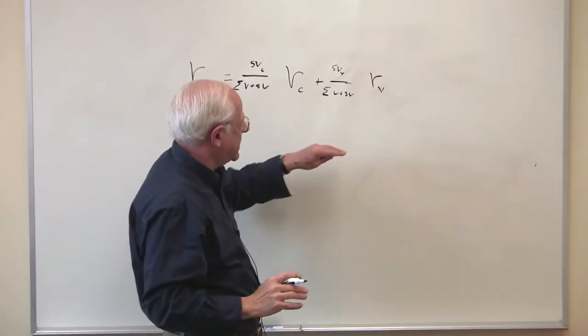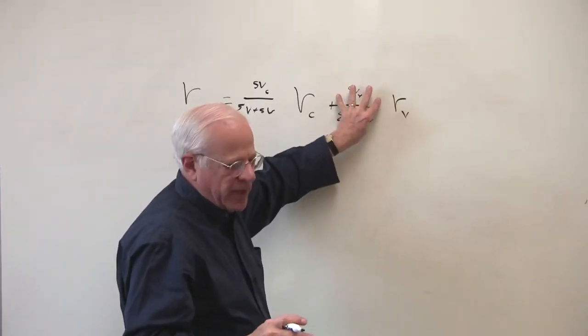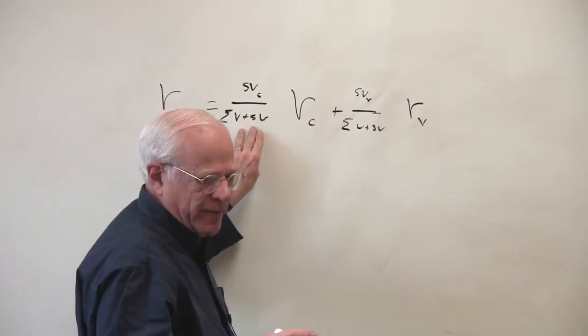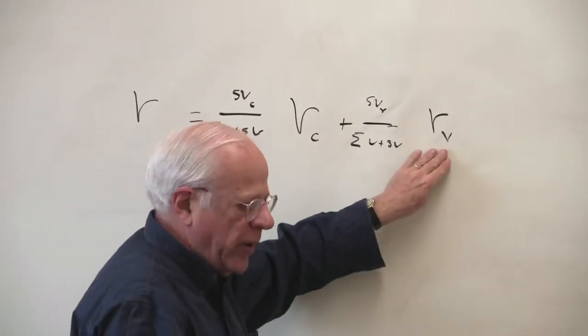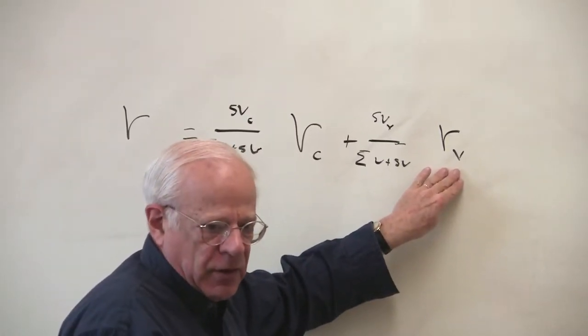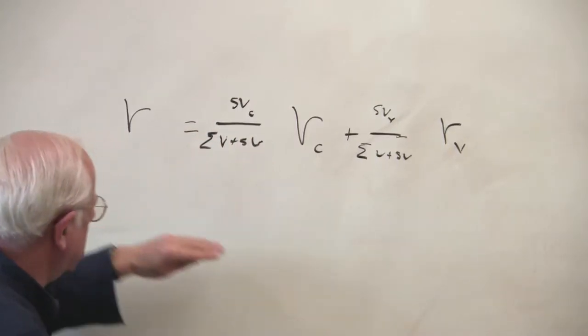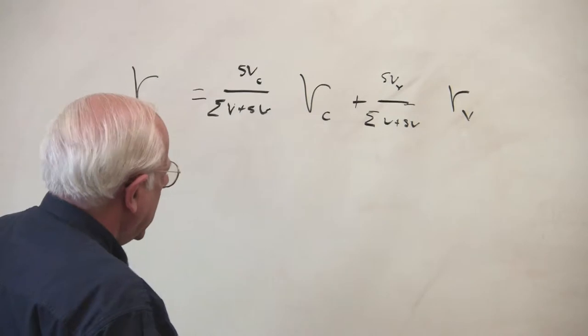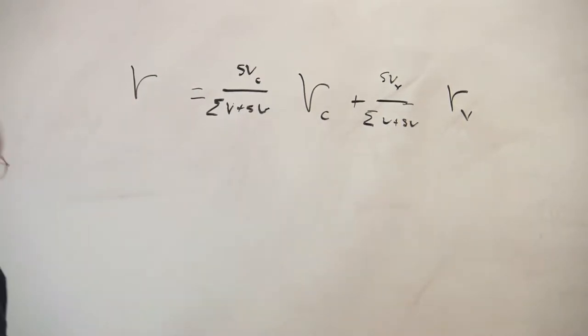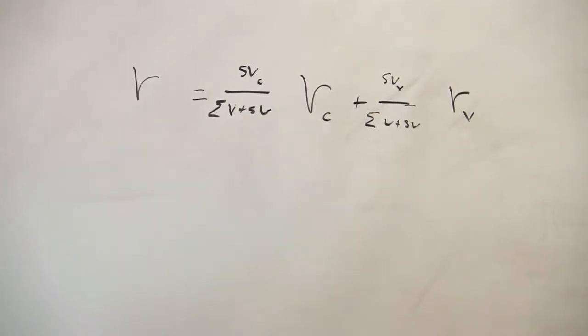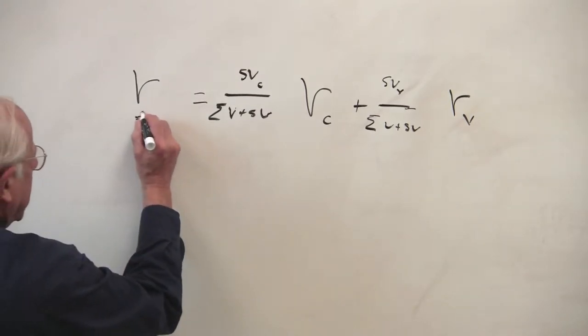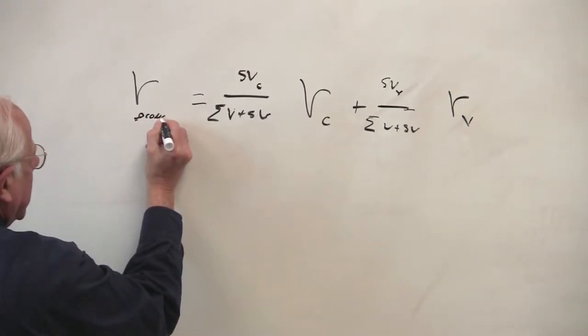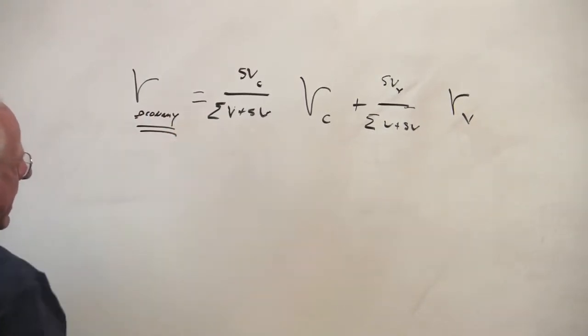This would be the proportion in the V of adding up of the surplus value in the economy. Roughly, very roughly, for the United States, this coefficient may be two-thirds, this coefficient may be one-third. In other words, the wage good industry contributes more to the overall growth in the economy, the profit rate, than does the means of production. So here's our weighted average equation for the two profit rates and the rate of profit for the economy as the weighted average of the two.